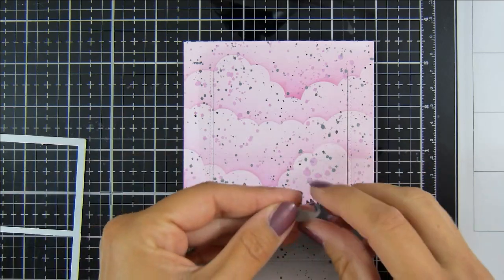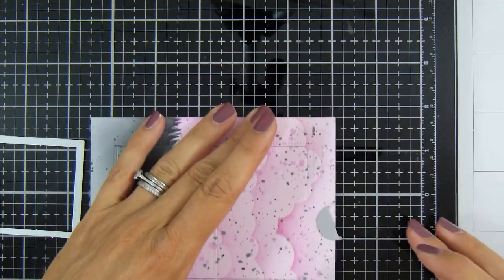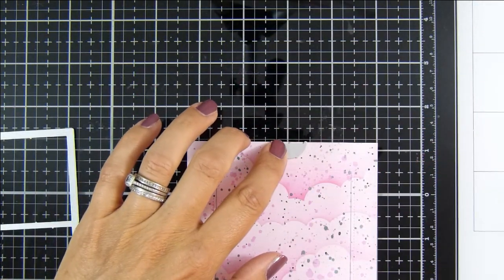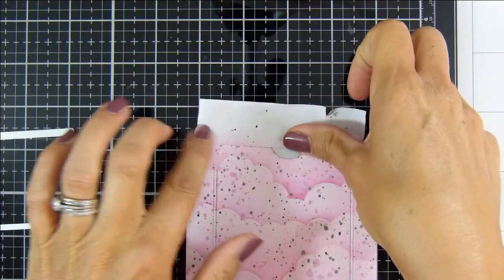This little half-moon notch die also comes in the set, so again, just centering that up and running it through my die-cut machine.